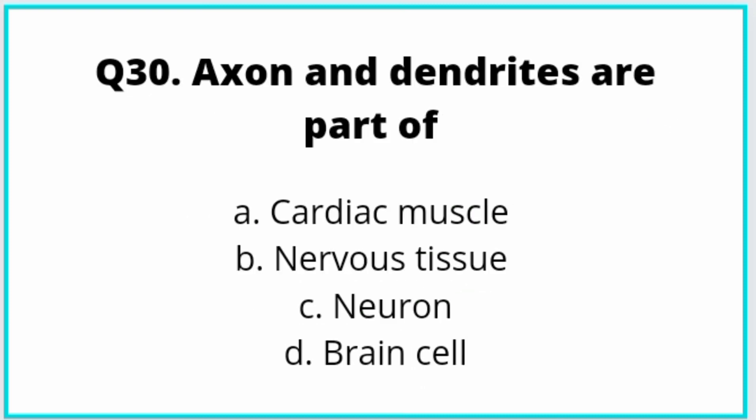The last question: Axon and dendrites are part of which structure? Option C: neuron. All the questions covered in today's video are very important for biology exams. Select these last questions and stay tuned for the next video. Thank you for watching.